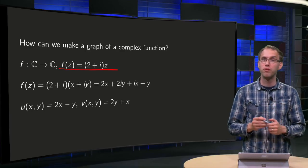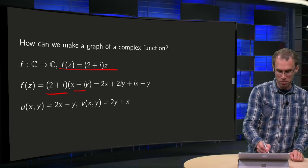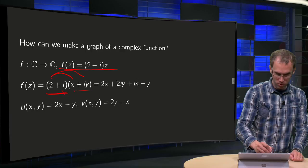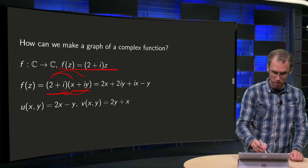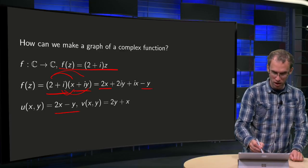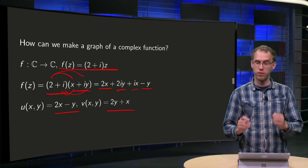So what do we do? First we determine u and v. So f(z) equals (2+i) times (x+iy), so we get 2x plus 2iy, plus ix minus y over here, so our u will be 2x minus y and our v will be 2y plus x. So there we have our u and v.